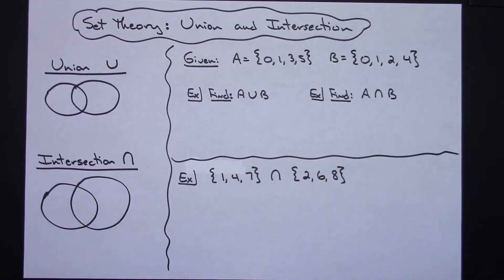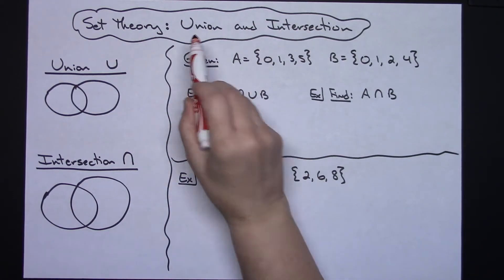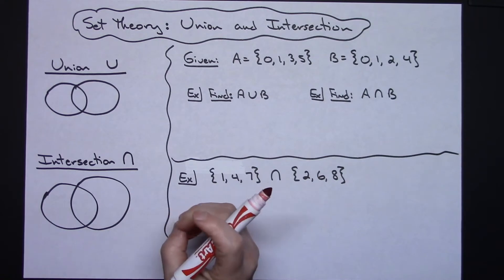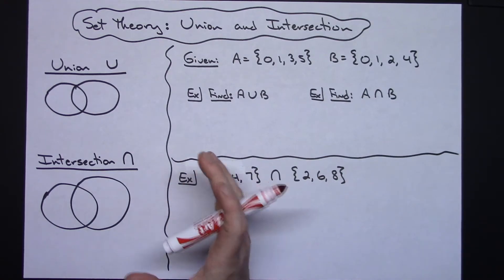In this video we're going to be taking a look at two concepts in set theory: one of those being a union, the other one being an intersection.